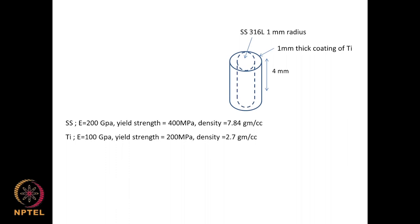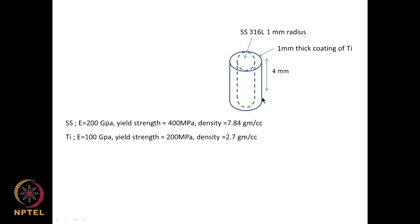Let us look at a problem: imagine a stainless steel 316L circular rod with 1 mm radius and a length of 4 mm — commonly used in orthopedic implants — coated with a 1 mm thick coating of titanium. Titanium is very biocompatible and bio-inert, so it is very good for such purposes. Stainless steel modulus is 200 GPa; titanium is 100 GPa. Yield strength of stainless steel is 400 MPa; titanium is 200 MPa. Density: 1.84 g/cc and 2.7 g/cc respectively.